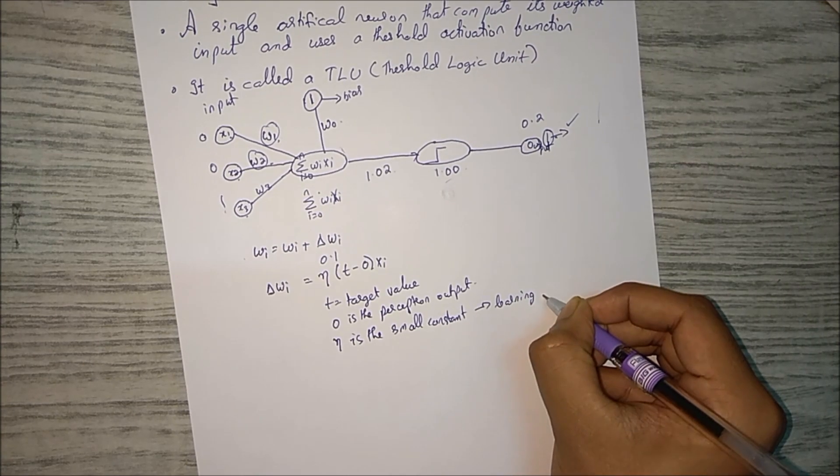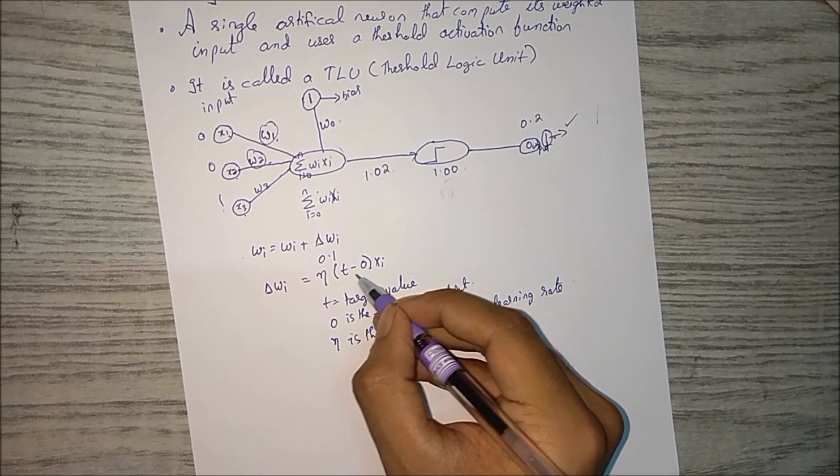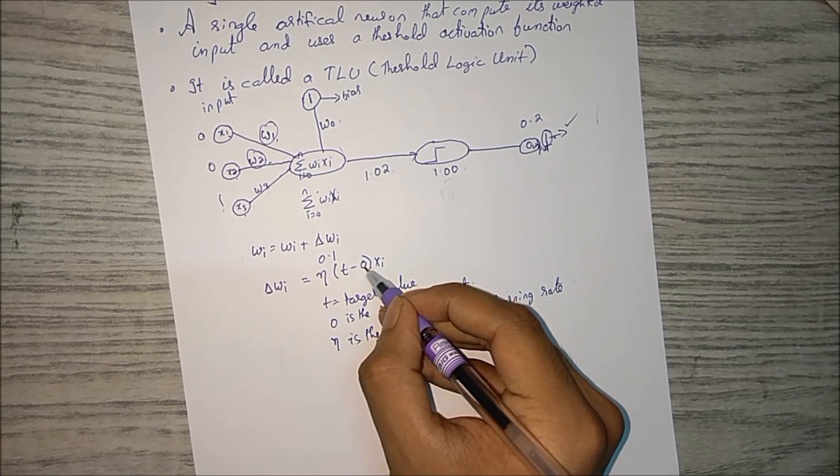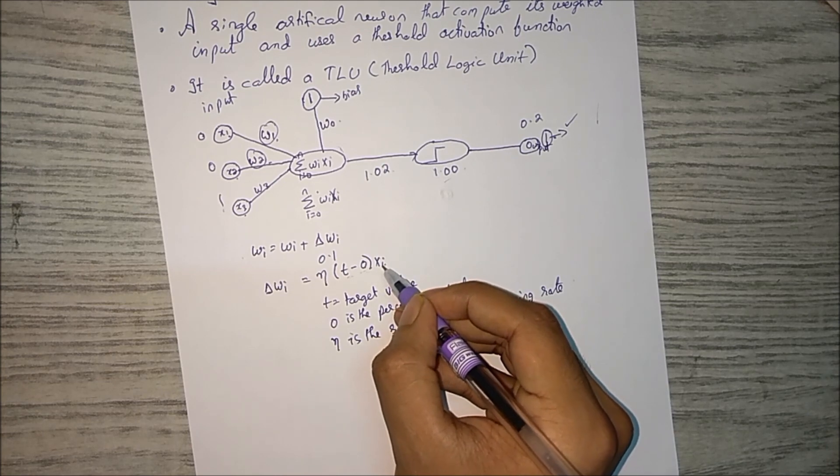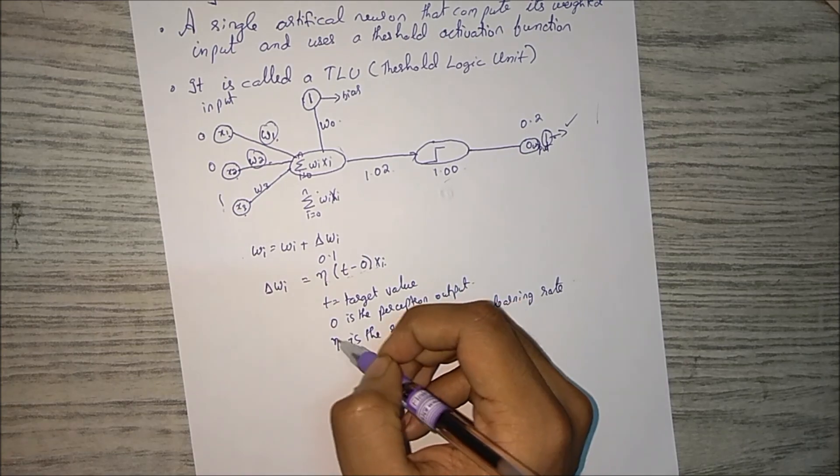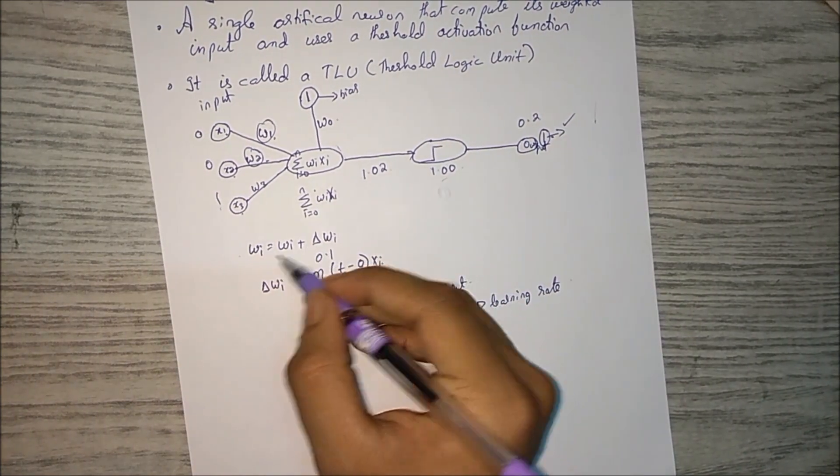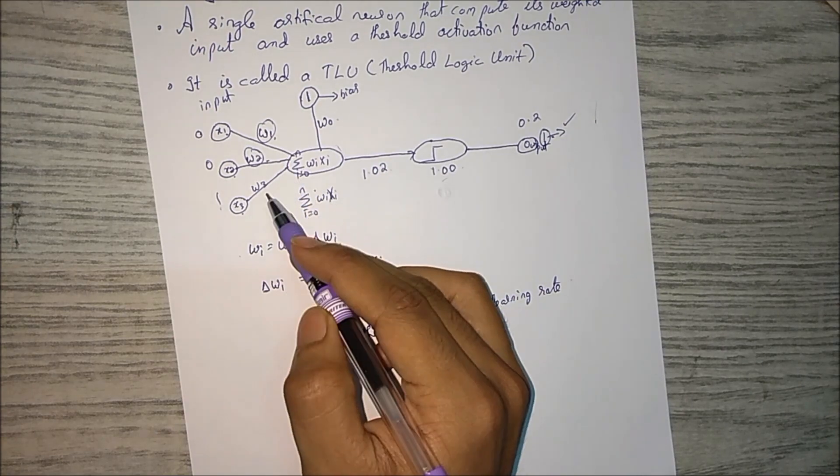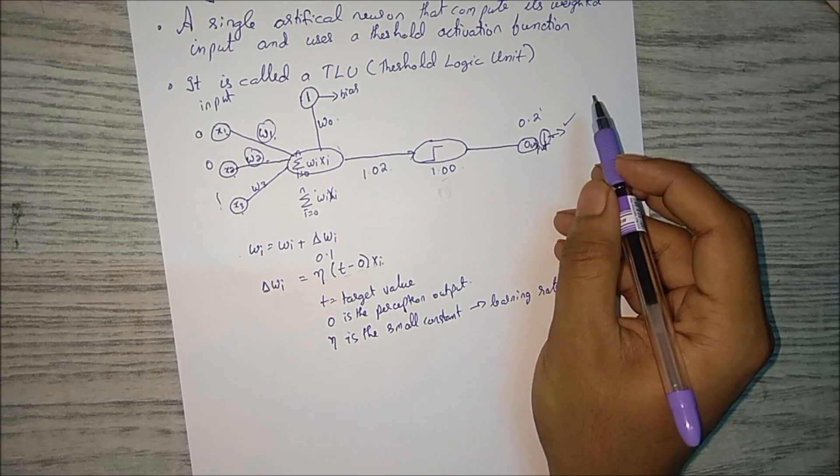And what is n? Otherwise it is known as learning rate. So how much it differs from the present output is calculated over here. That is multiplied with xi and that is again multiplied with n. So what is n? n is learning rate. So these weights get adjusted, this will go on until we get the output as our expected output.